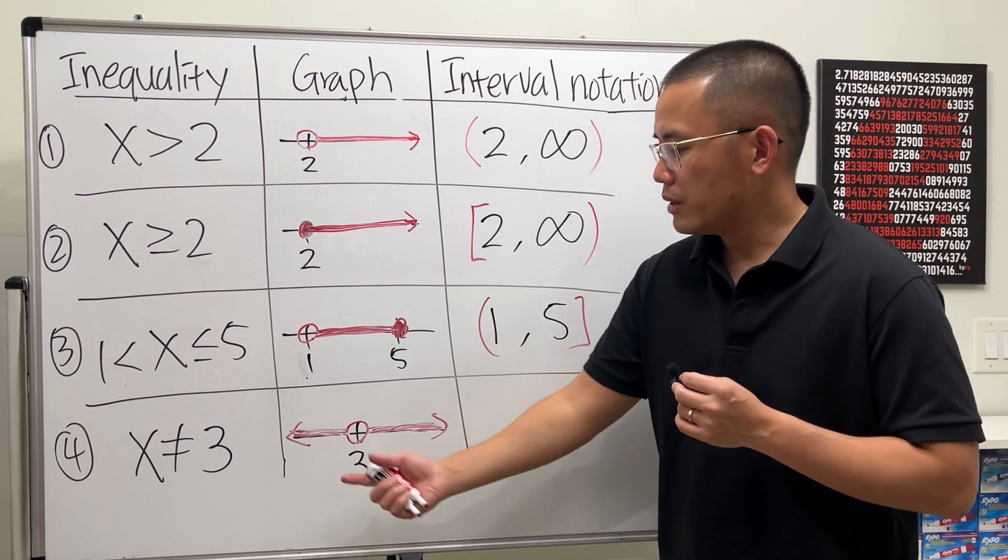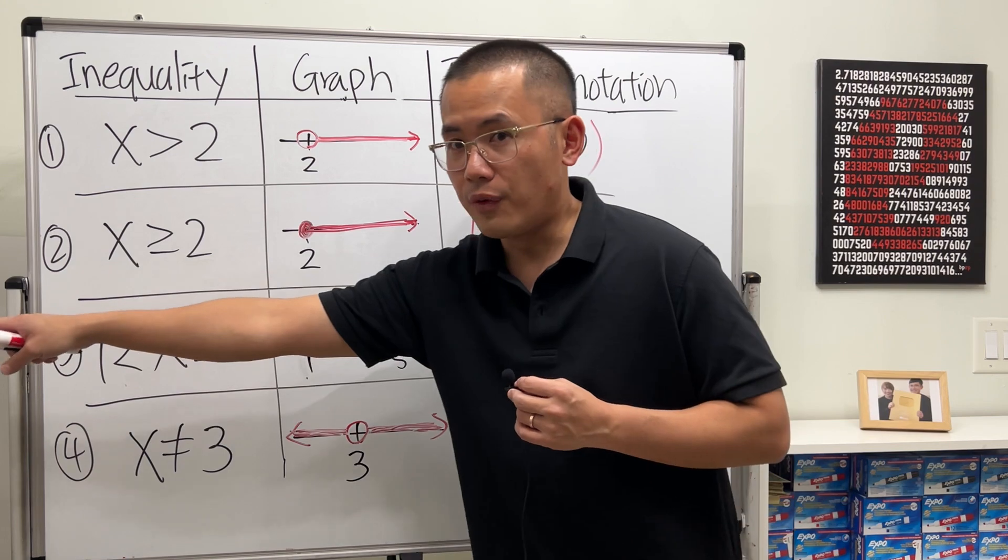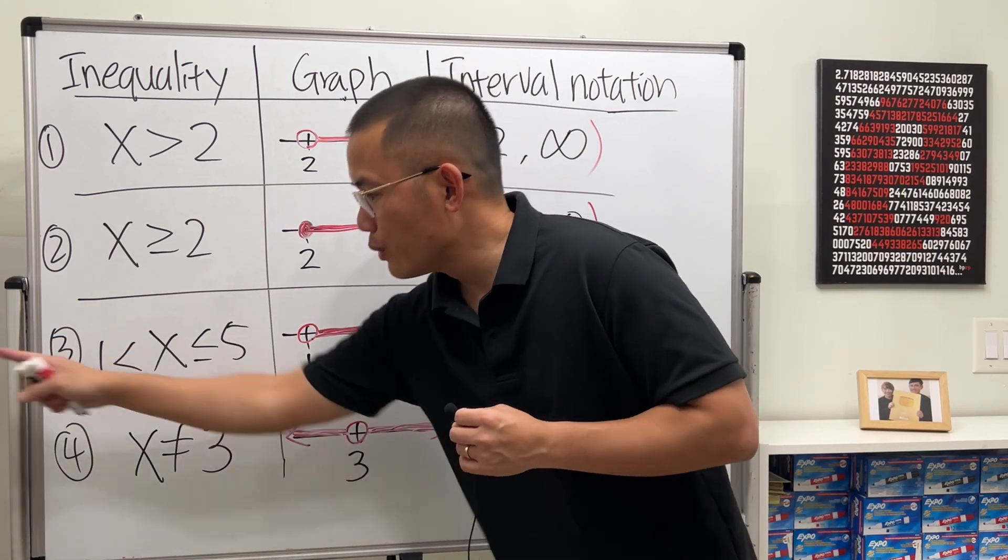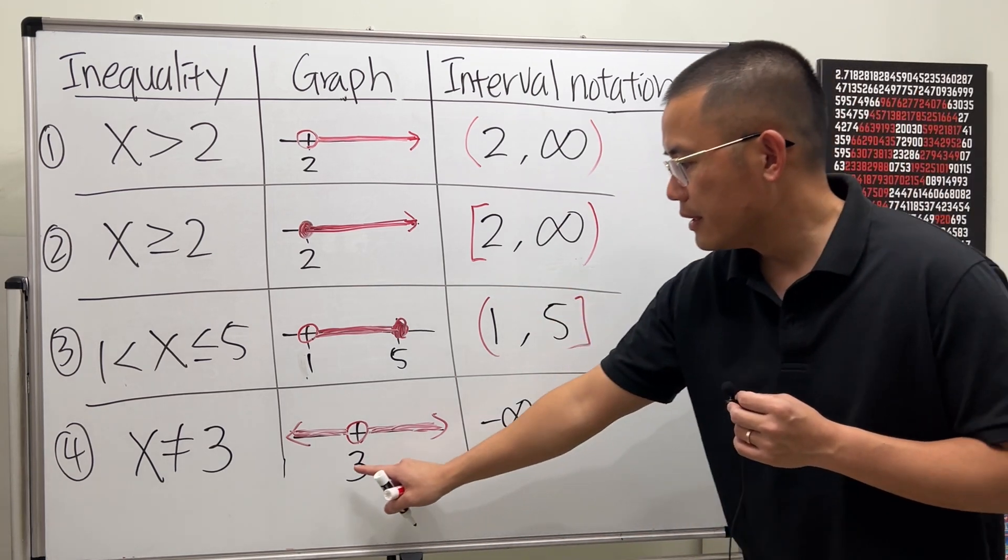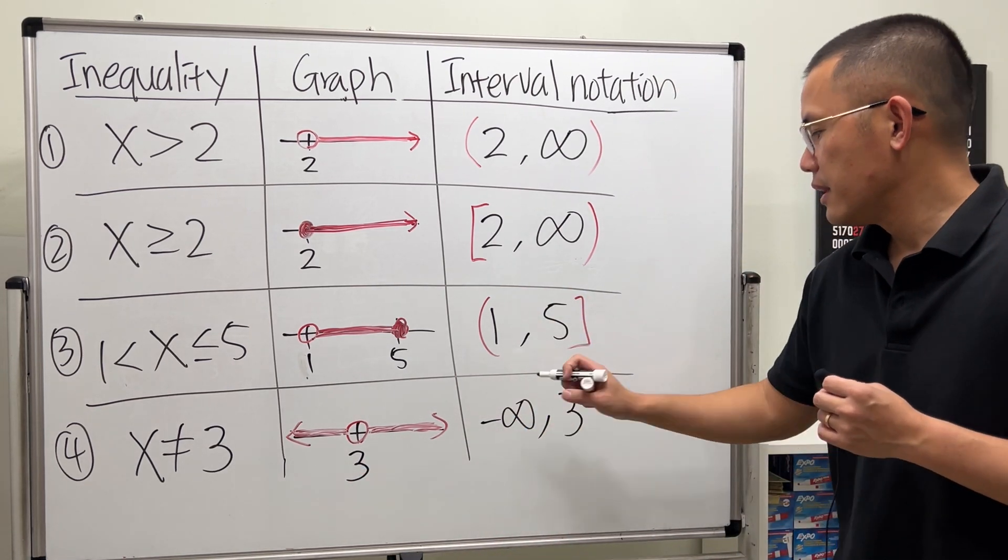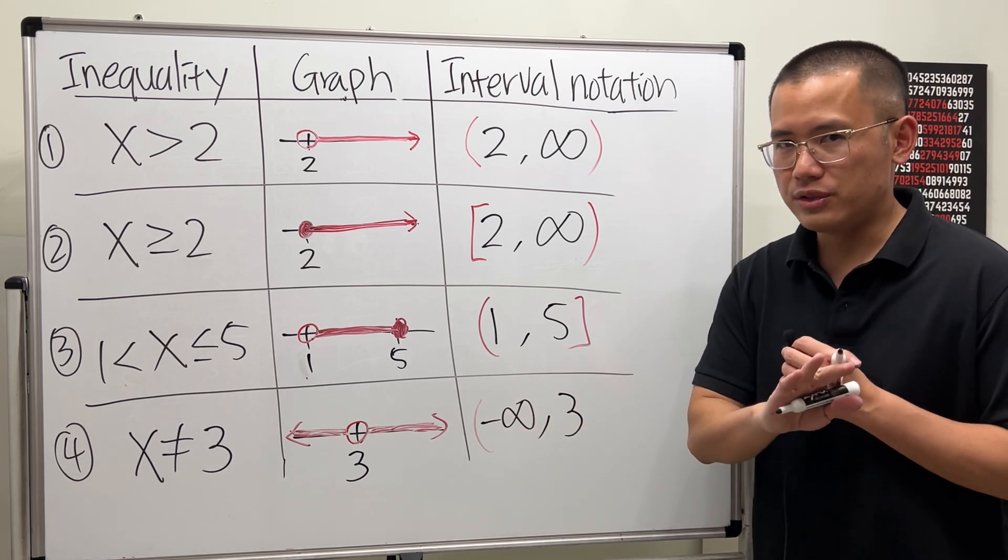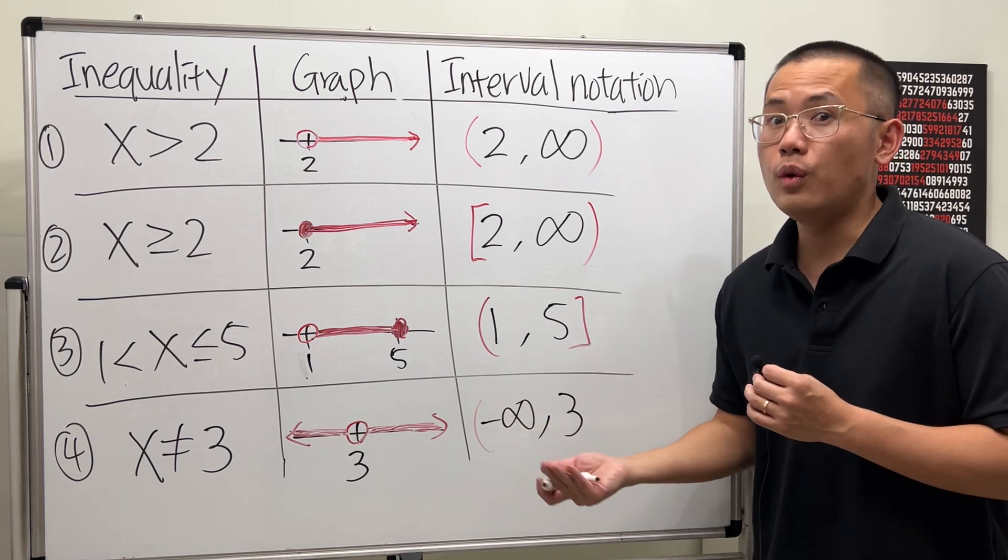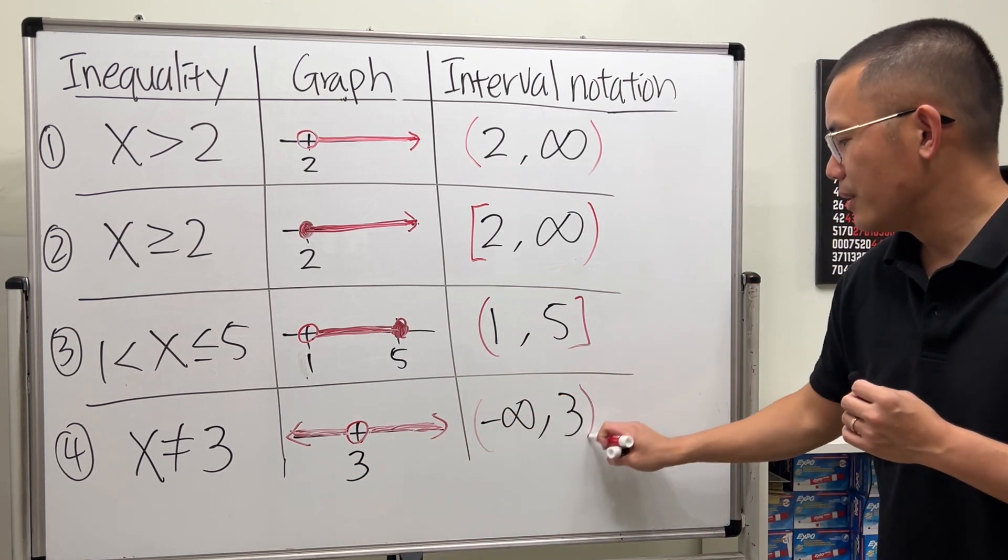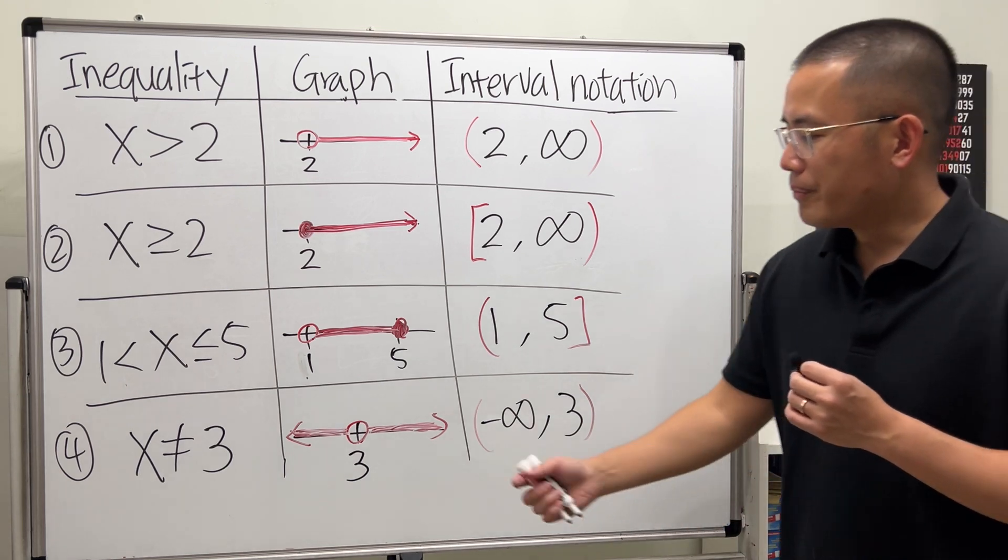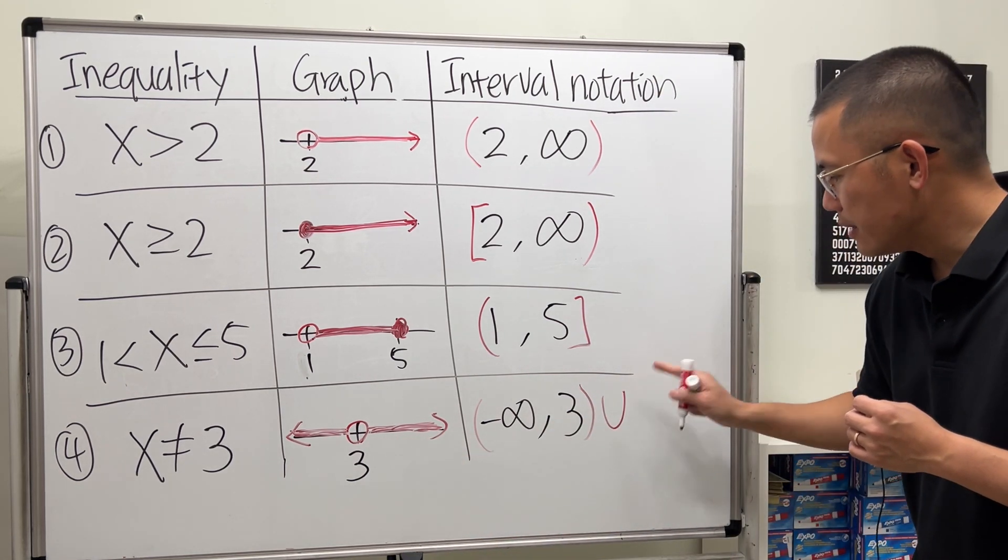So how do we do this though? Notice that we have two pieces for the interval, right? This piece all the way from negative infinity because we go all the way to the left. So the starting is negative infinity, comma 3. Now, this has a negative infinity parentheses because you can never include infinity or negative infinity. So parentheses. And then for the 3, parentheses, because we are not including that. Now, because we have another piece, we are going to put down this symbol. This is called the union.